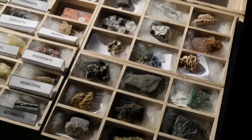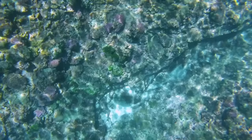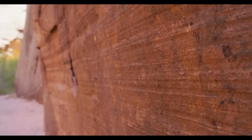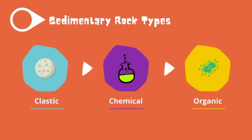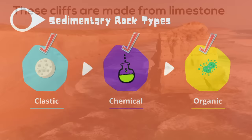Sedimentary rocks are formed from pre-existing rocks or pieces of once-living organisms. They form from deposits that accumulate on the Earth's surface or under the ocean. These particles are called sediment and may be composed of minerals or once-living matter called organic matter. Sedimentary rocks can be divided into several groups: clastic sedimentary rocks, which form from fragments of pre-existing rocks; chemical sedimentary rocks, which form by precipitation of minerals from water; and organic sedimentary rocks, such as coal and limestone, which form from the accumulation of plant and animal debris.